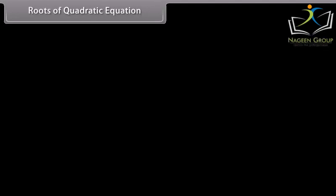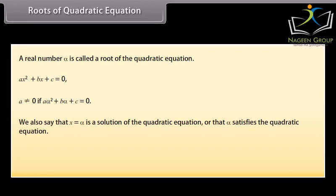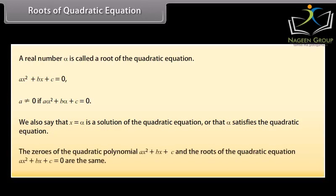Roots of a quadratic equation. A real number alpha is called a root of the quadratic equation ax² + bx + c = 0, where a ≠ 0, if aα² + bα + c = 0. We also say that x = alpha is a solution of the quadratic equation, or that alpha satisfies the quadratic equation. The zeros of the quadratic polynomial ax² + bx + c and the roots of the quadratic equation ax² + bx + c = 0 are the same.